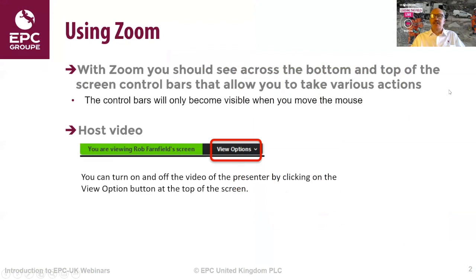First of all, if you're not used to using Zoom, just a couple of tips. You should see across the bottom and top of the screen control bars that allow you to take various actions. Generally these bars will only be visible when you move the mouse. Across the top of the screen there should be a small control bar which allows you to control whether or not you see me. You can turn off the video by clicking on the view option button at the top of the screen, or you can turn it on — personal choice.